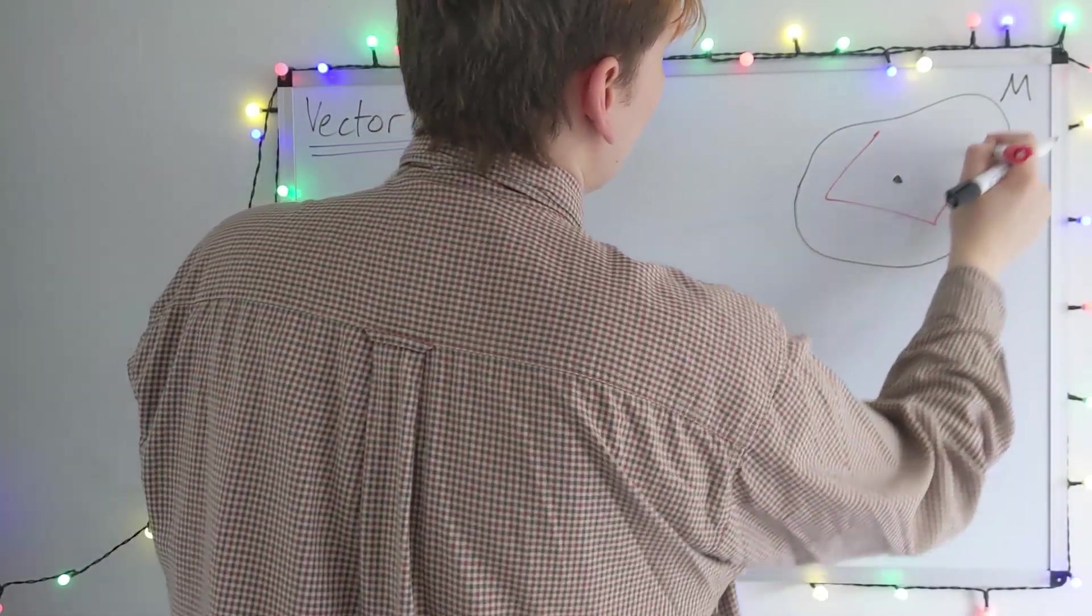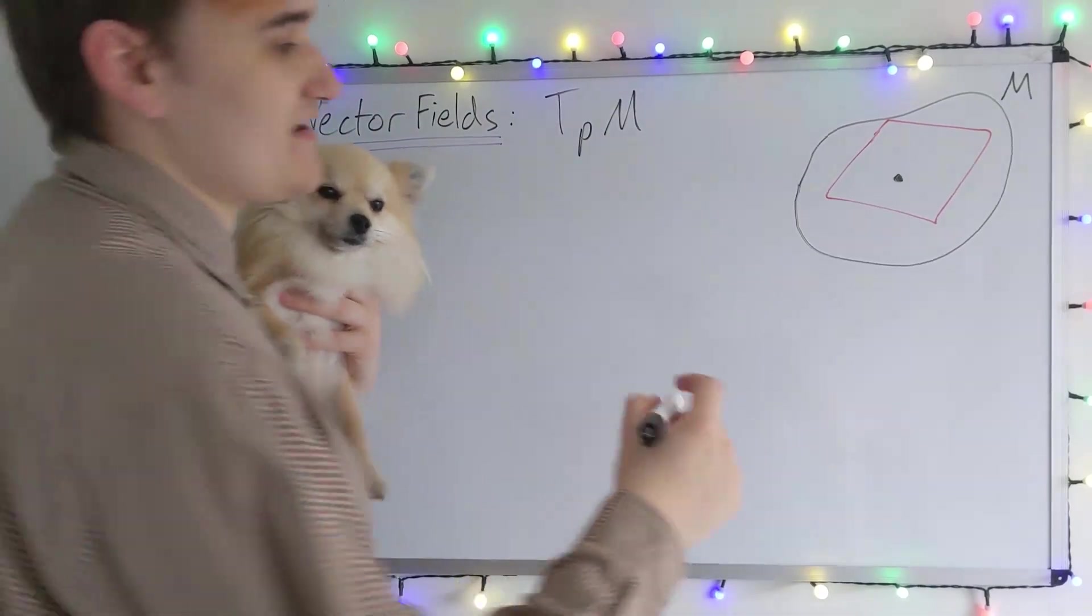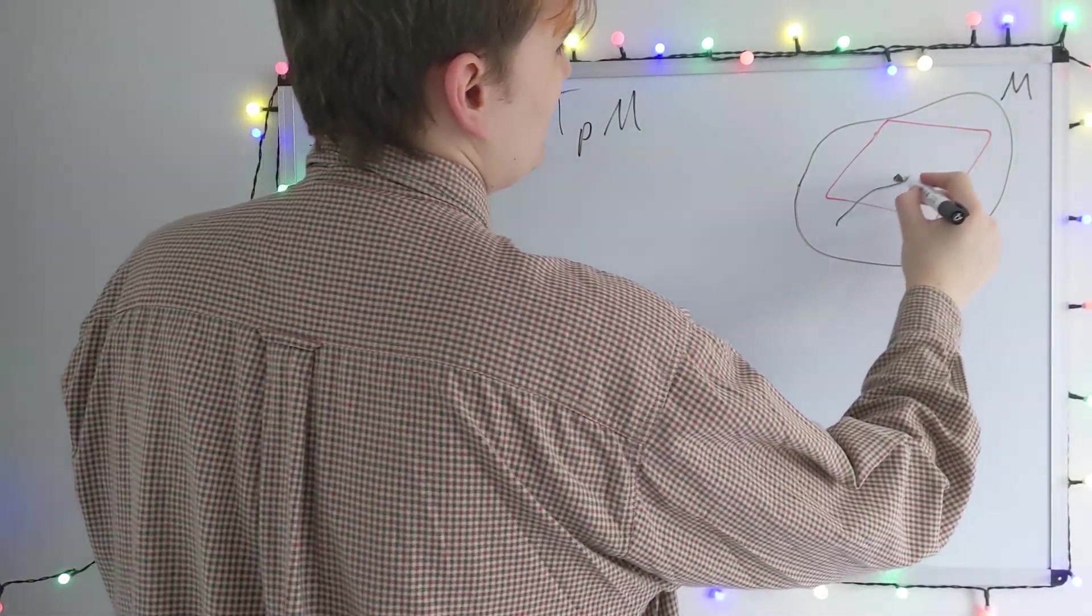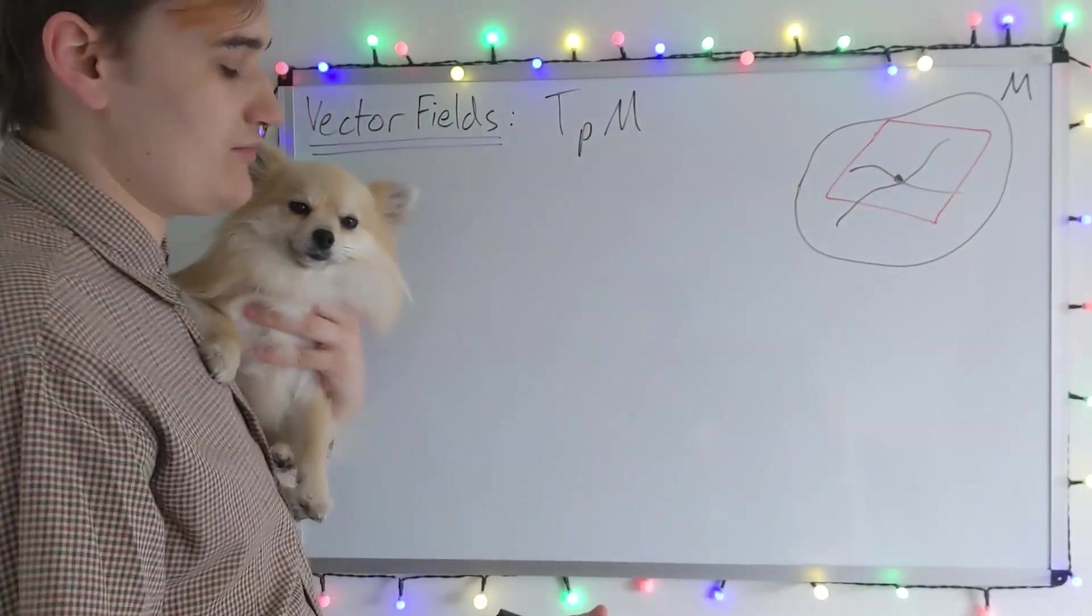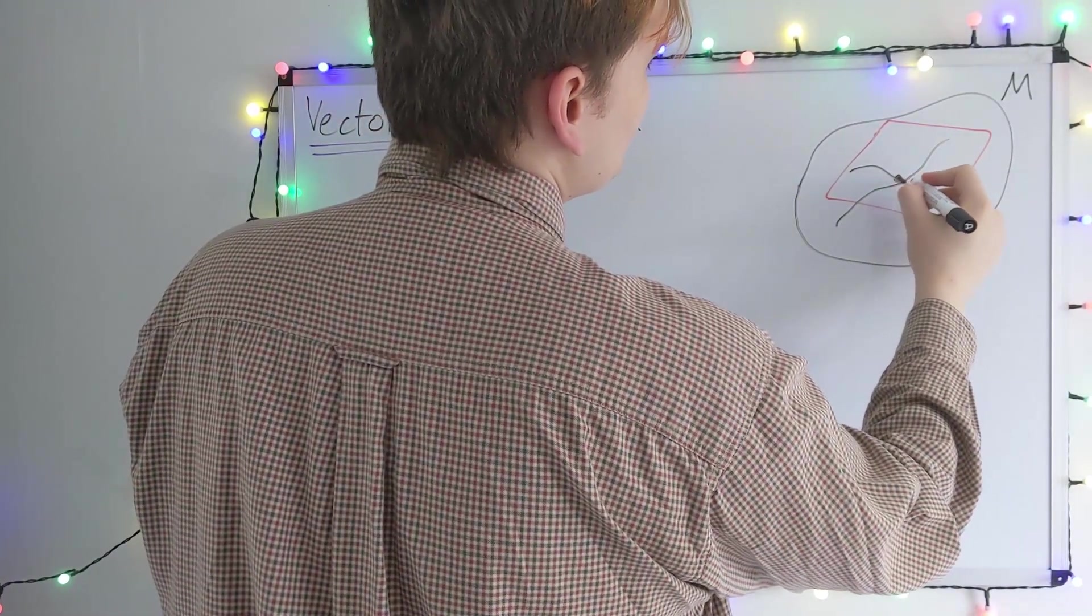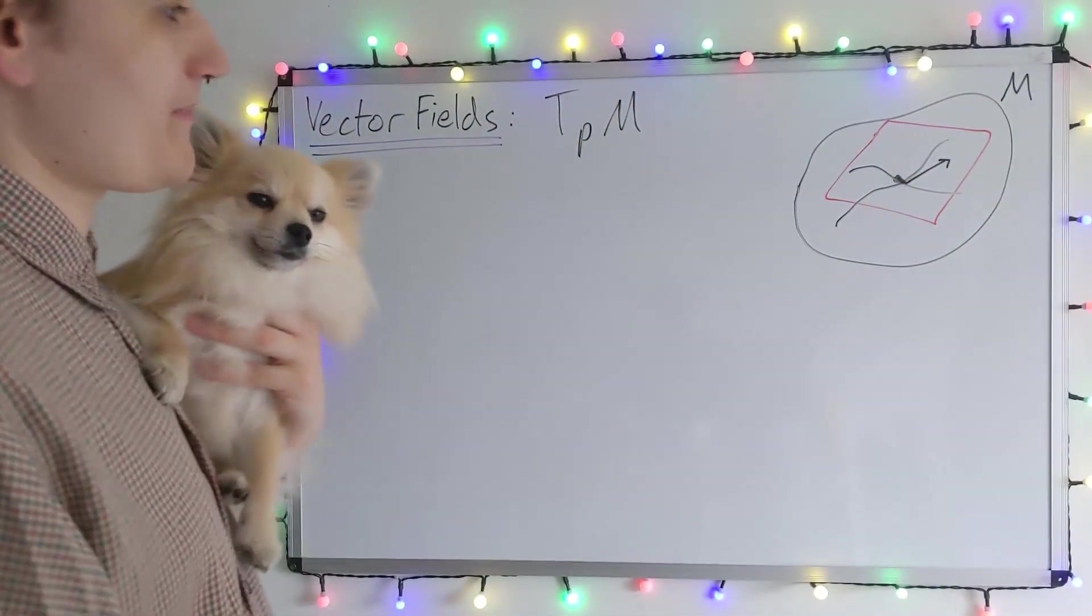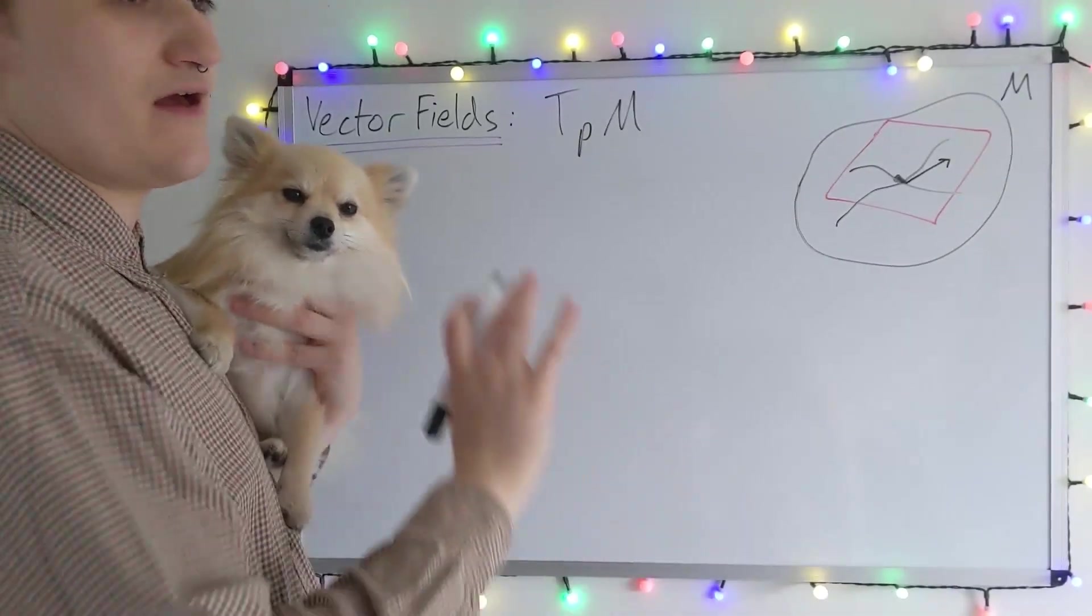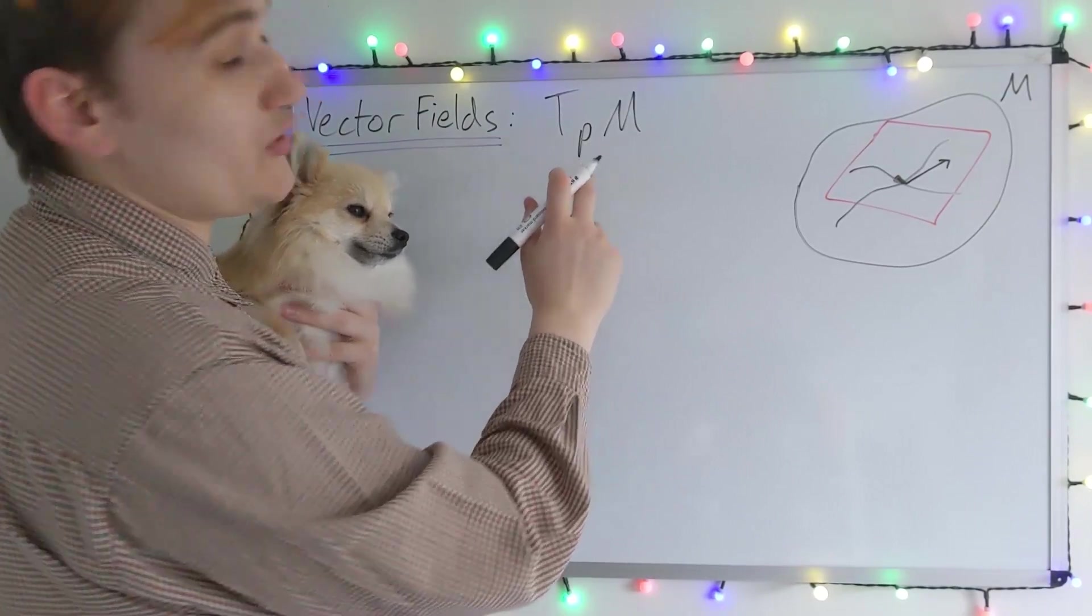We saw how we constructed this space by considering any smooth curve that we can draw through the particular point, and then the tangents to these curves produce the tangent vectors. All of that discussion was perfectly valid, however the tangent space that we constructed is only at a single point.